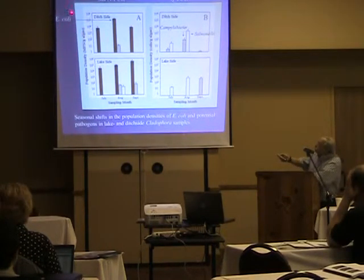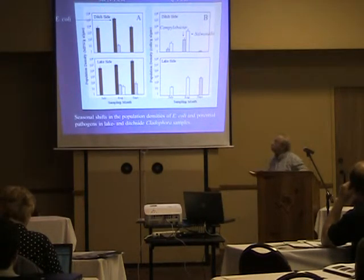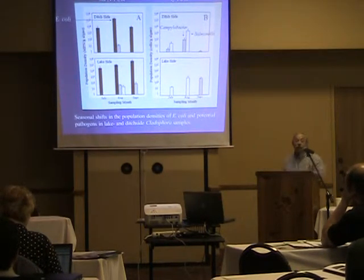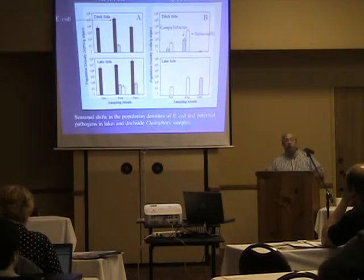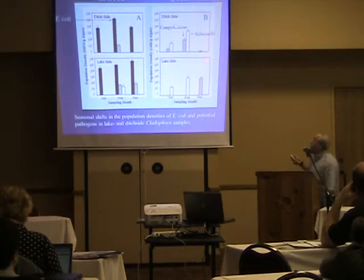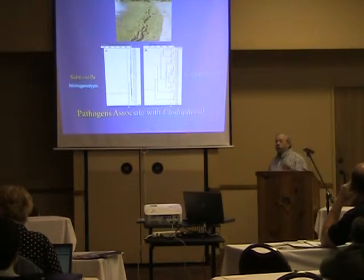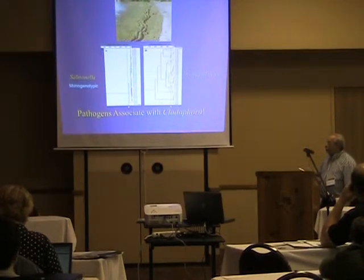Following the organisms present in cladophora isolated from those ditches, we found astounding numbers of E. coli — around 10⁵ to 10⁶ per gram on the ditch side, and around 10⁴ per gram on the lake side of the algae. Little kids are playing in this stuff on the beach. Not only do we find E. coli associated with the algae, we also find campylobacter and salmonella associated with it.